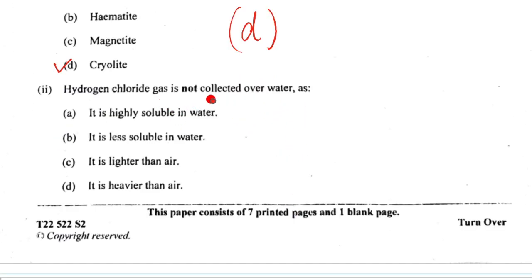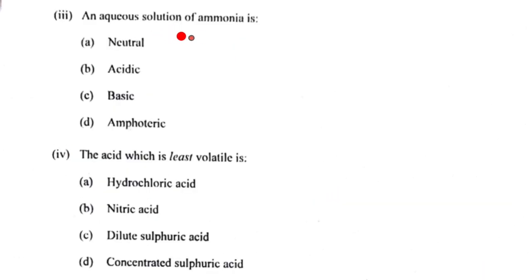Question 2: Hydrogen chloride gas is not collected over water. Why? It is highly soluble in water. The other options are incorrect. The correct option is A. Question 3: An aqueous solution of ammonia is NH4OH, which has OH- imparting basic nature. So the correct option is basic, which is C.